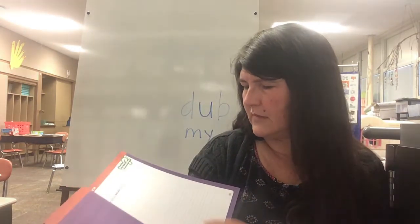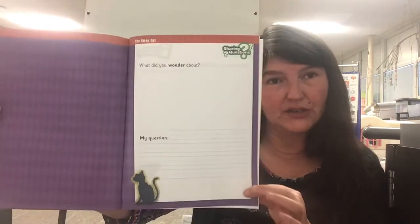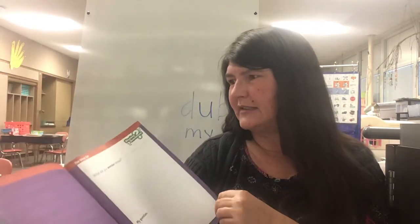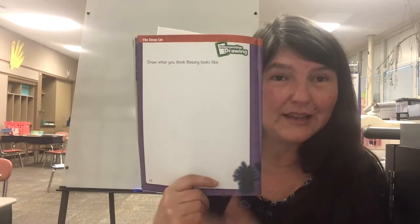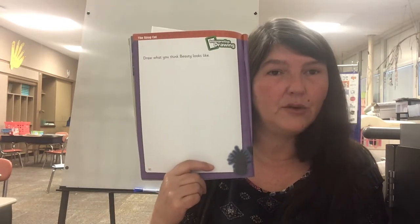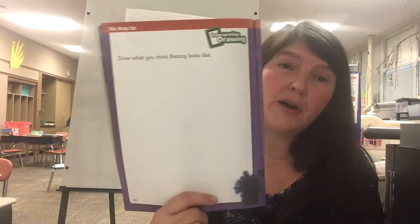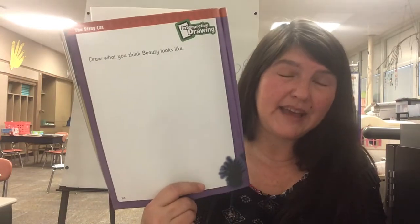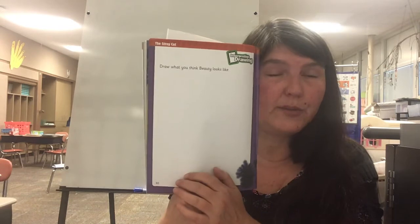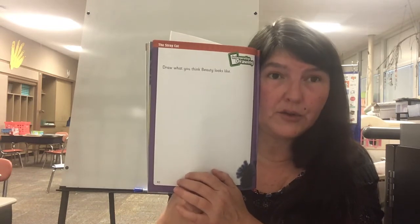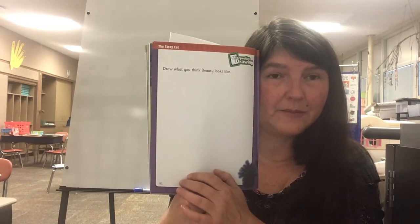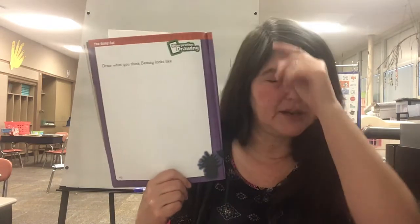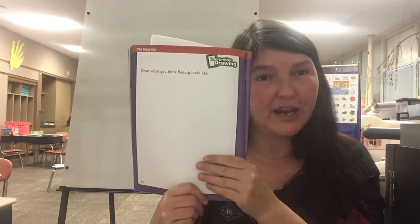In your book we did the wonder page where you put your questions yesterday. Now today I want you to think about what you think Beauty the stray cat looks like. Think about the words that the poet uses to describe the cat, and then draw a colorful picture to show what you think Beauty looks like.